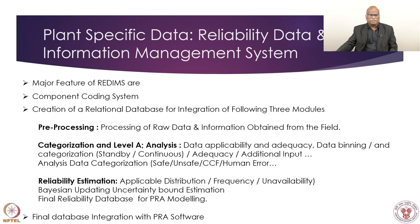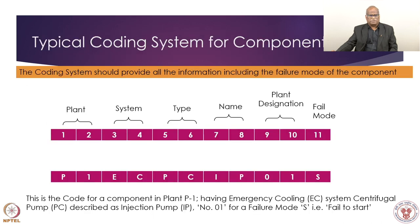There are examples here on plant-specific data management, categorization, and analysis. A database called Reliability Data and Information Management System has been developed. The component coding is a very critical element because it is the key that connects to various other aspects of the database. Data analysis happens at the pre-processing level where raw data is obtained from the plant. Then categorization is done at the second stage, reliability estimation at the third stage, and final data ready for PRA is available.